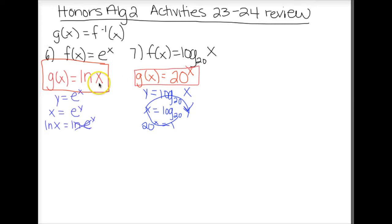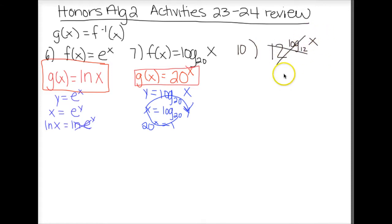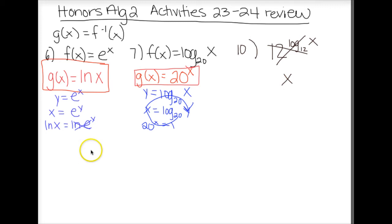The next two problems — 9 and 10 — are just using the inverse property. Looking at number 10, we've got 12 to the log base 12 of x. The key here is that I have an exponential of base 12 and a logarithm of base 12 — those cancel each other out, and the only thing left is the input value, which is x. Remember the answer is always whatever is the input value, or the exponent on the other form.